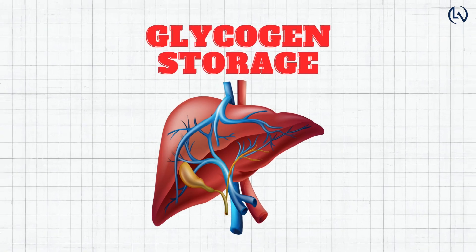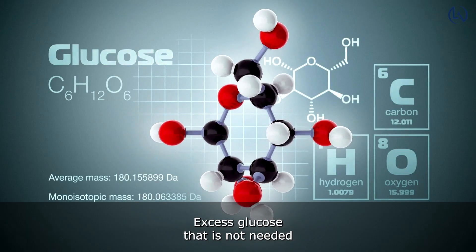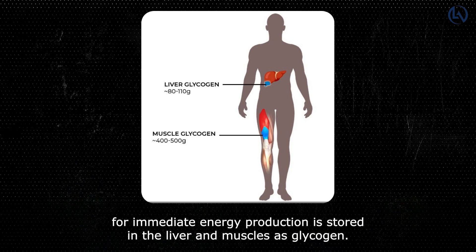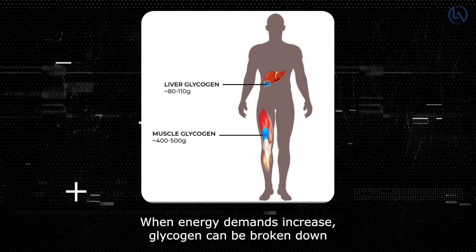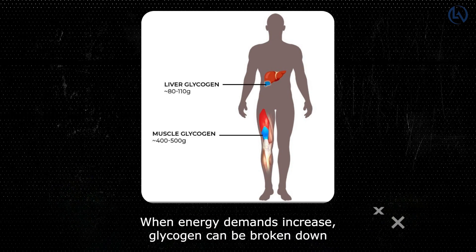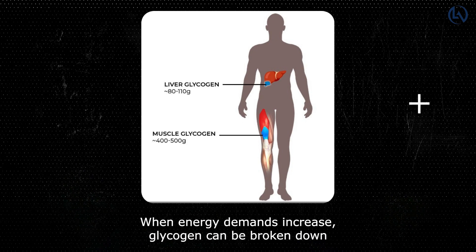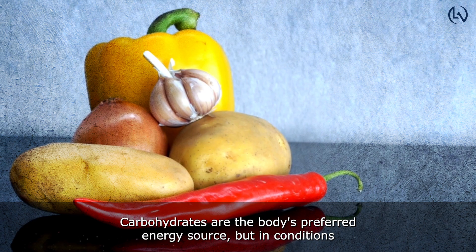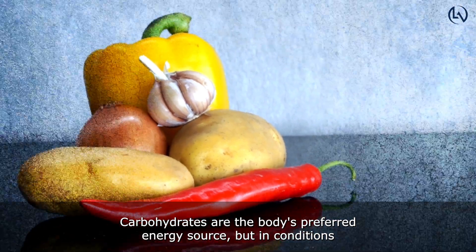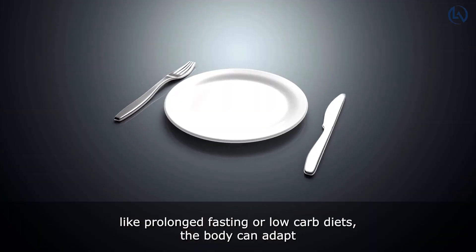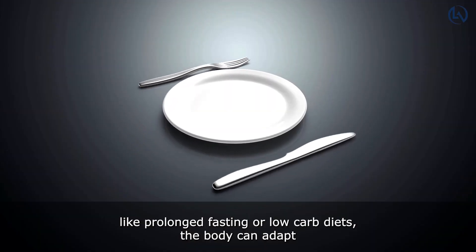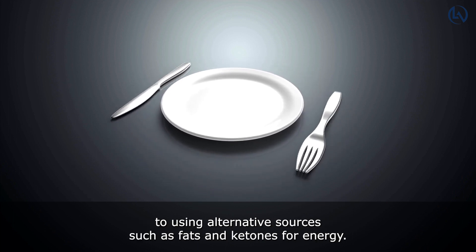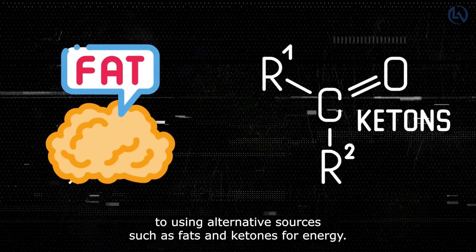Glycogen Storage: Excess glucose not needed for immediate energy production is stored in the liver and muscles as glycogen. When energy demands increase, glycogen can be broken down back into glucose and utilized. Carbohydrates are the body's preferred energy source, but in conditions like prolonged fasting or low-carb diets, the body can adapt to using alternative sources such as fats and ketones for energy.